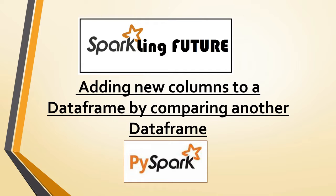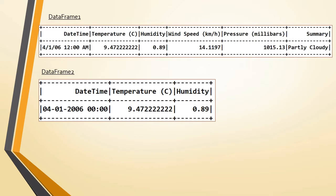For example, let's say you have a data frame with 6 columns in data frame 1, whereas you have only 3 columns in data frame 2. You have to make data frame 2 equal to data frame 1, and in that case we need to have the same column names as data frame 1.